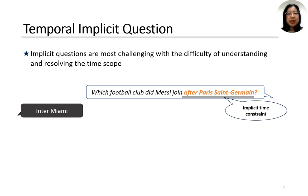One special case of question answering is temporal question answering, focusing on questions with time constraints. Questions with implicit time constraints, or implicit questions, are most challenging in temporal QA, with the difficulty of understanding and resolving the time scope of the constraints.